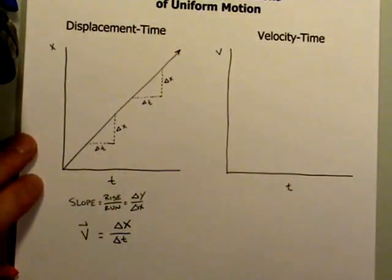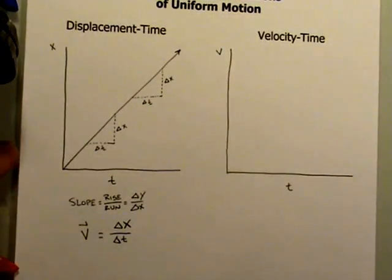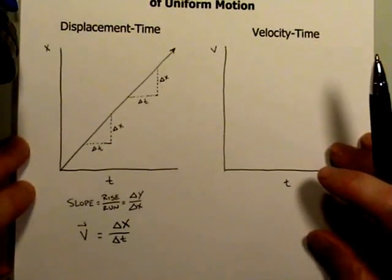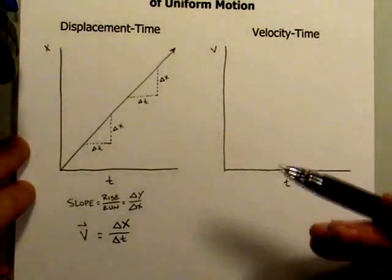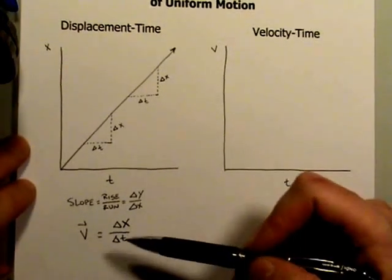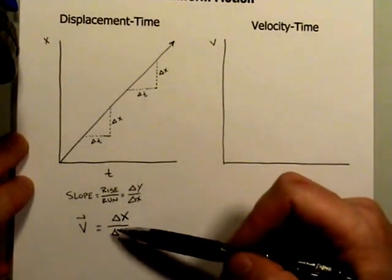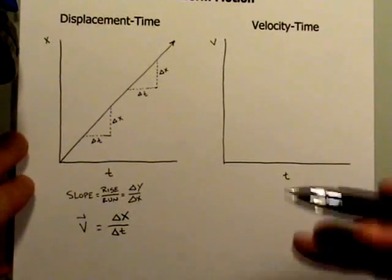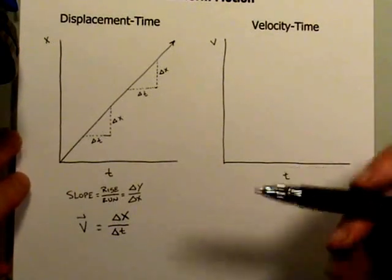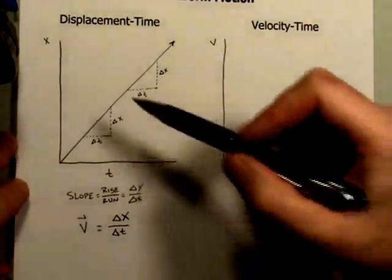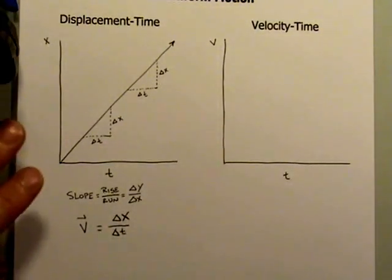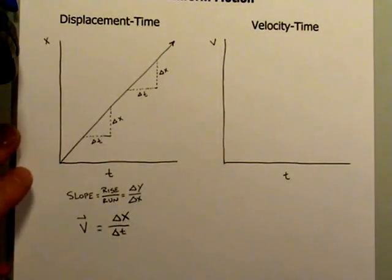That's a deeper interpretation of a motion graph. In your math class you've calculated slopes of lines, but you might not have thought of the idea that the slope of a line might have physical meaning — that it might mean something in the real world. In this case, the slope of this graph represents the velocity of the object in the real world.